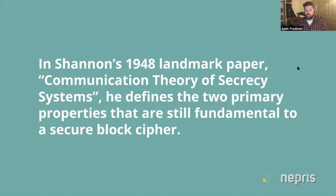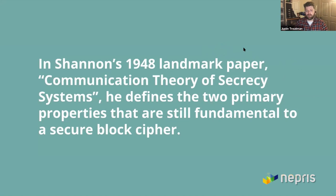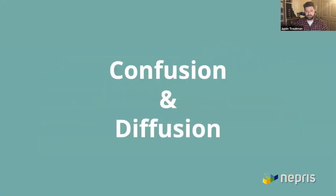What Claude Shannon did — and he wrote a paper in 1948 — is still the hallmark of how we design things today in 2020. He was responsible for two fundamental things that still permeate cryptographic design: the two properties of a secure block cipher called Confusion and Diffusion. Going back to the time of Julius Caesar, or even before, and looking at cryptography today, you'll see this theme of confusion and diffusion all throughout history.